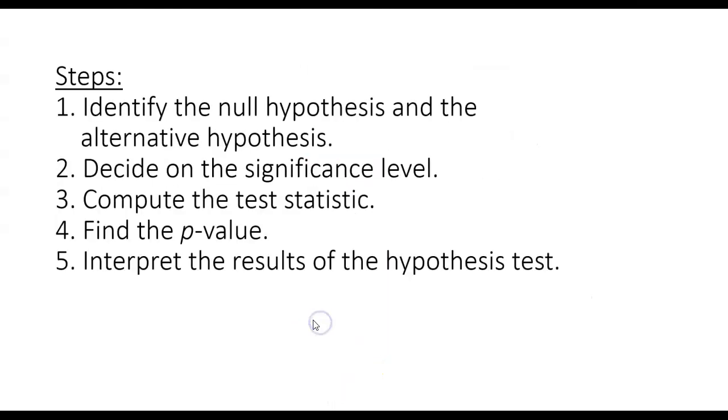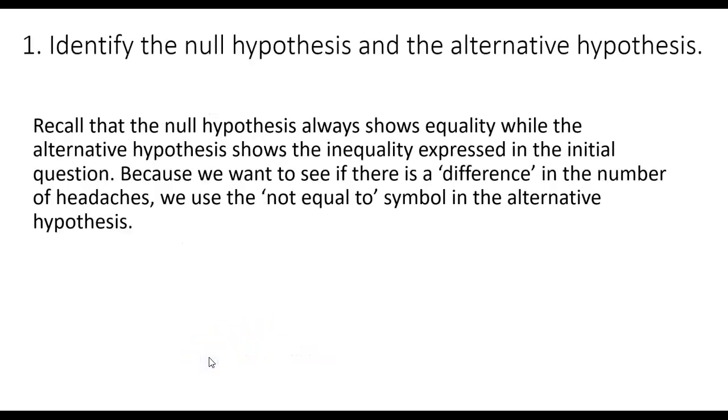Before we jump into that, let's review our steps. We will first identify the null and alternative hypothesis. We will decide on the significance level. We will compute the test statistic. We'll find the p-value. And after we get all of that finished, we will be able to interpret the results of our hypothesis test. Let's jump in.